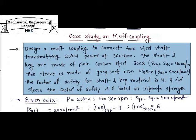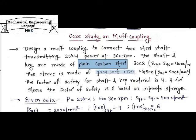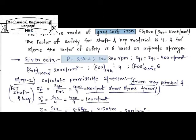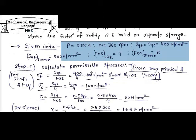So with this statement, we need to design a MUF Coupling on the basis of the given conditions of 25kW power at 360rpm, using plain carbon steel for shaft and key material and gray cast iron for the sleeve material. First, we need to calculate permissible stresses to check whether our dimensions are safe enough to bear the given power of 25kW.